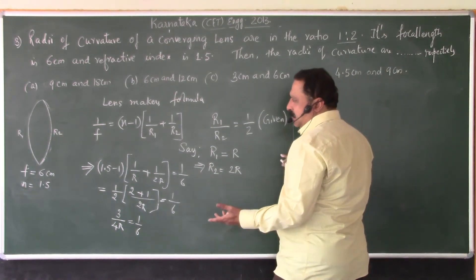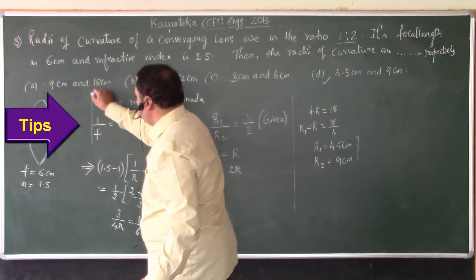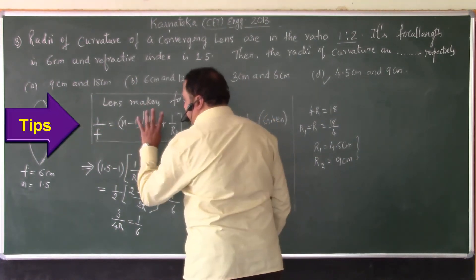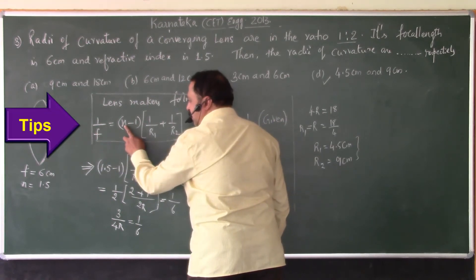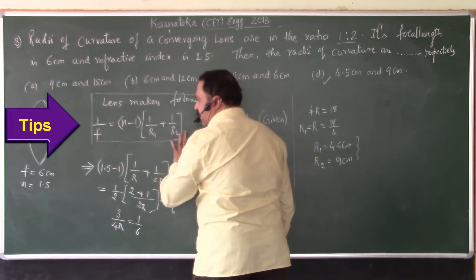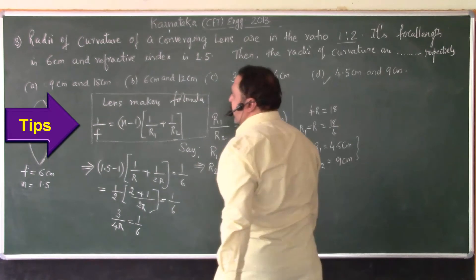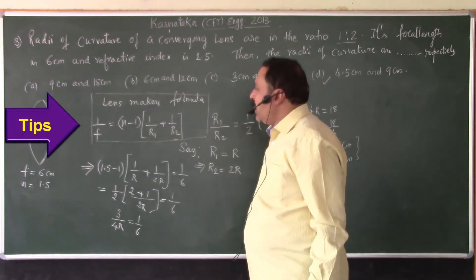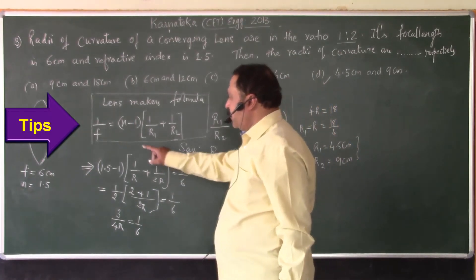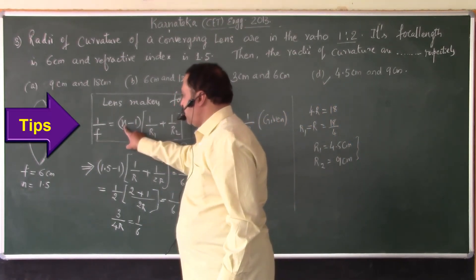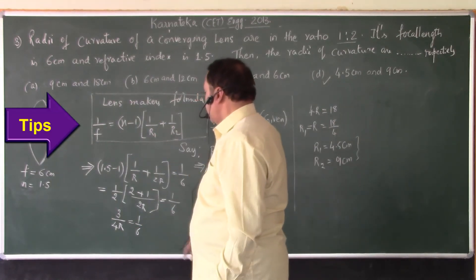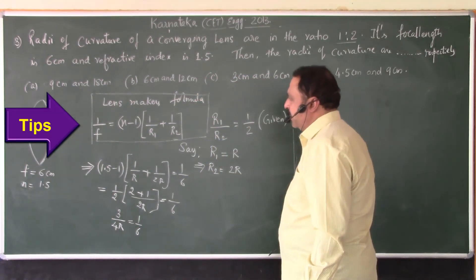The simple thing here is to remember lens makers formula. So, whenever you have a problem connecting three quantities: focal length, refractive index and radii of curvature, then to find any one of them, we make use of this formula. This is the only formula that will help us to do many problems, either to find the focal length of the lens or to find the refractive index of the lens or even as we have found here, the radii of curvature of the two faces of the lens.